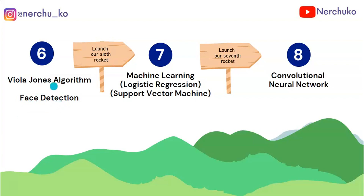The Viola-Jones algorithm is used to detect the frontal face. If we have half faces or side faces, we use a different algorithm. For face detection we also have two classifiers in machine learning: logistic regression and support vector machine. We need to know the histogram of gradients plus the support vector machine for object detection.